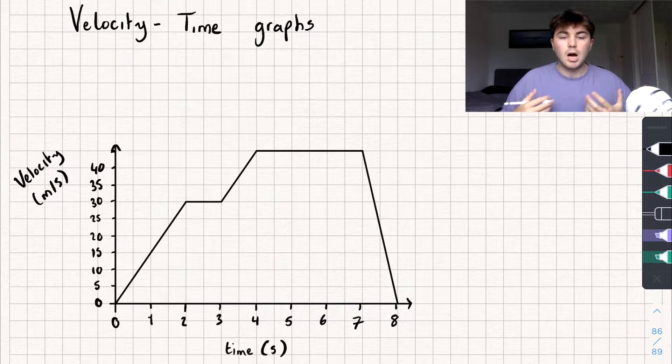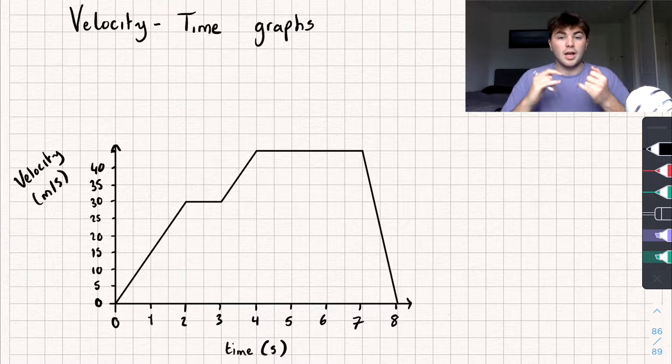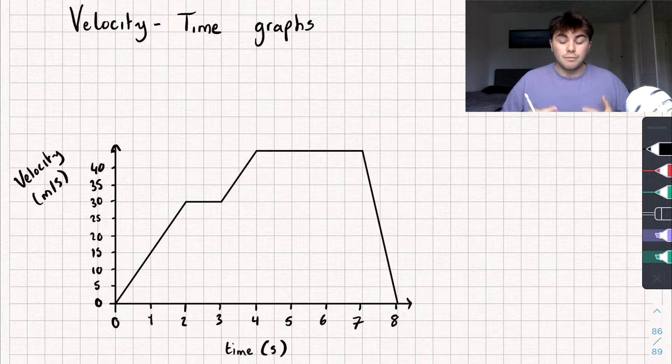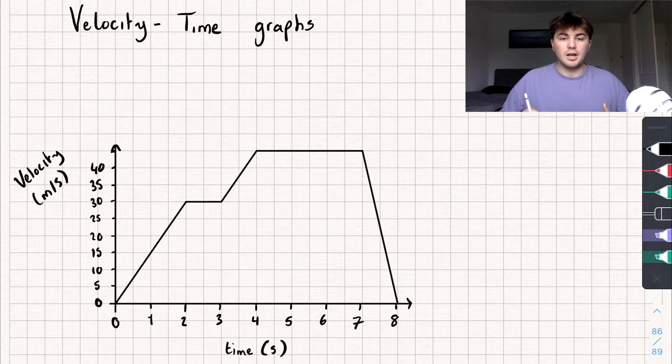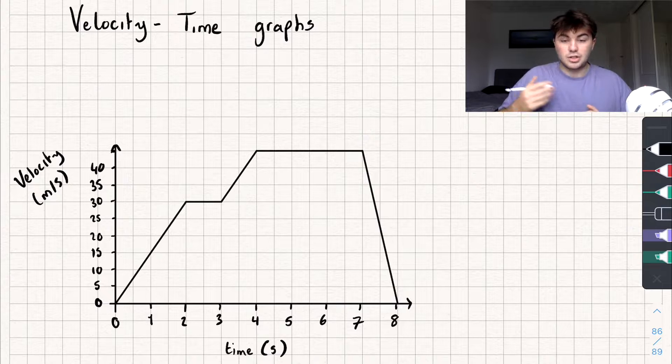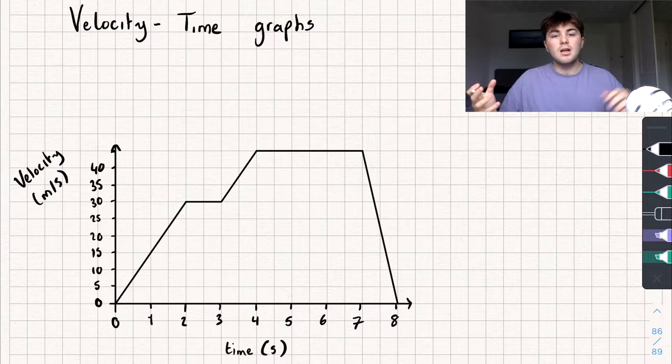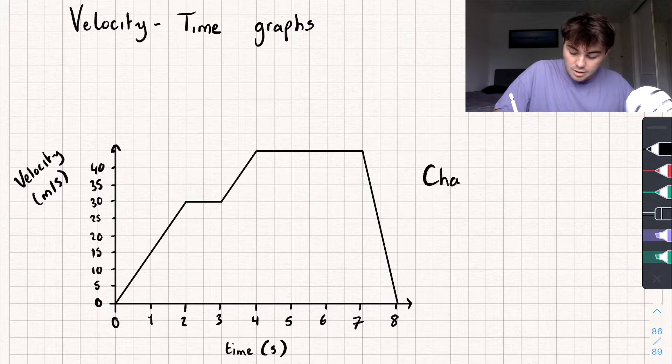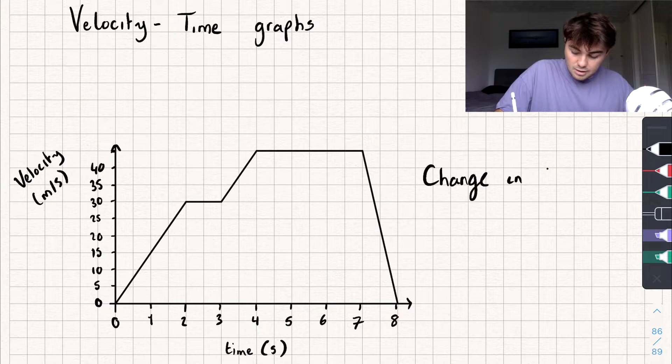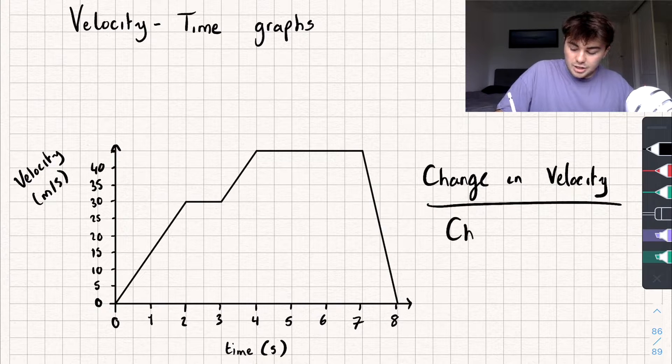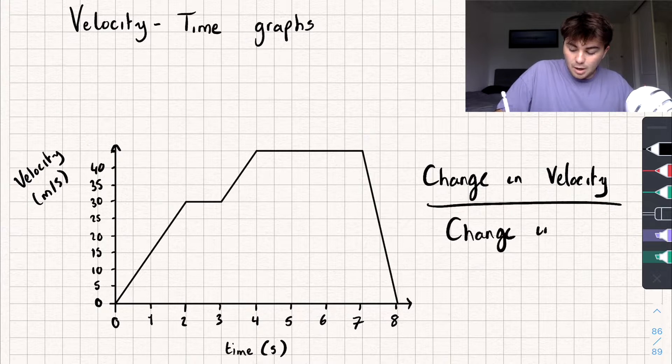We can also tell a couple other things from this graph. I can get the distance I've travelled as well as the acceleration. And we can find the acceleration by finding the gradient on the line at a specific point. So we can find the gradient by doing the difference in y or the change in y divided by the difference in x. So really what I'm doing is I'm finding the change in my velocity divided by the change in time. And that gives me my acceleration.